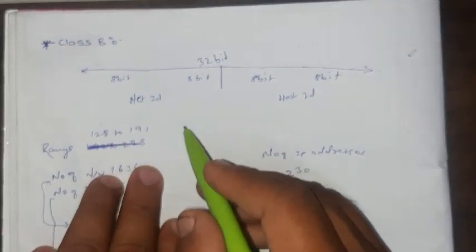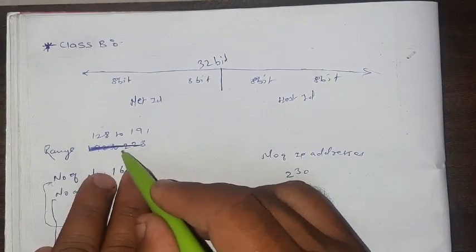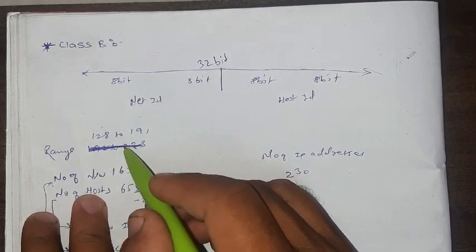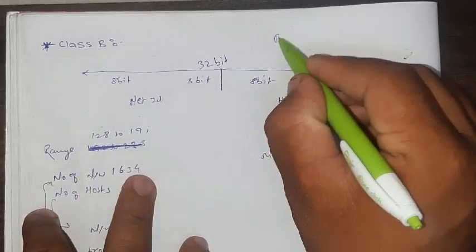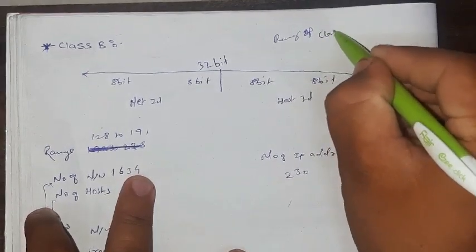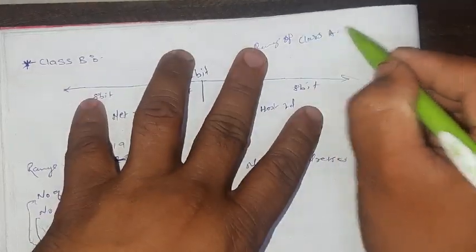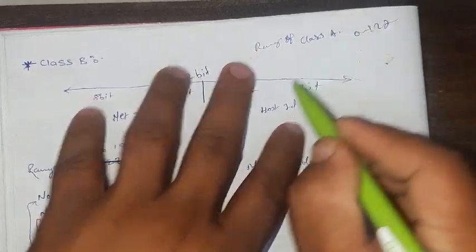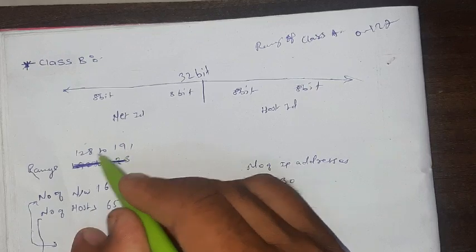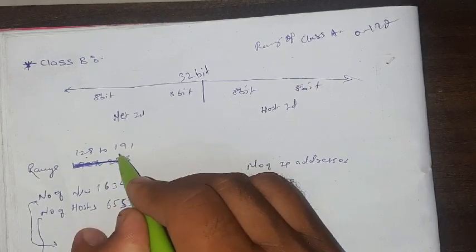First of all we'll discuss about the range of Class B IP address. We know the range of Class A that is 0 to 127. Now here the range of Class B that is 128 to 191.